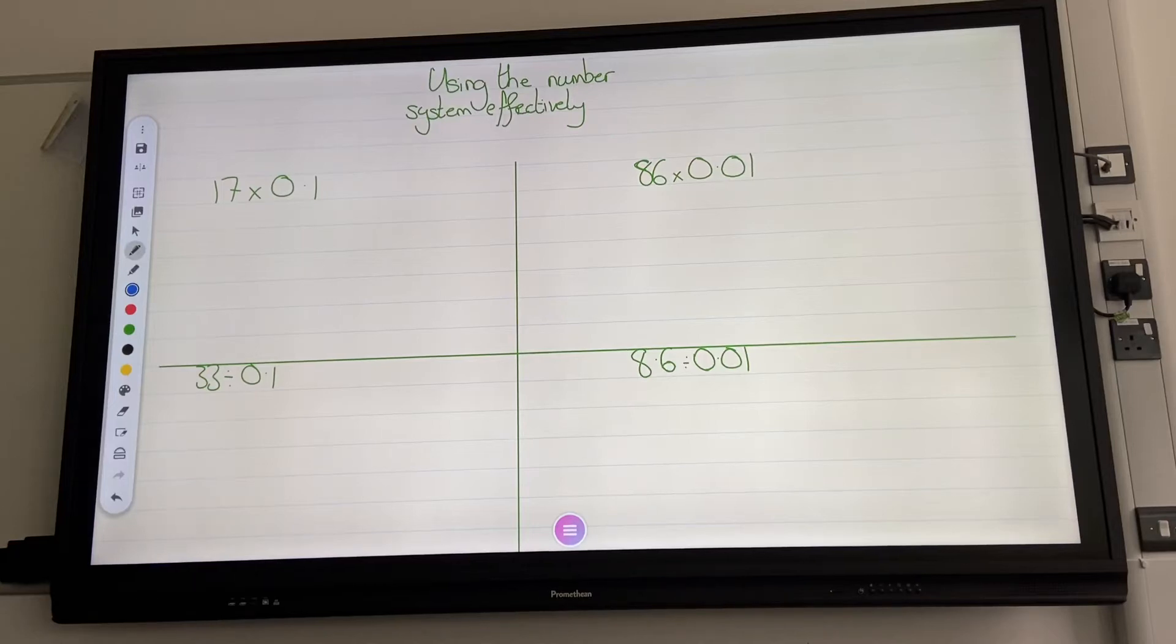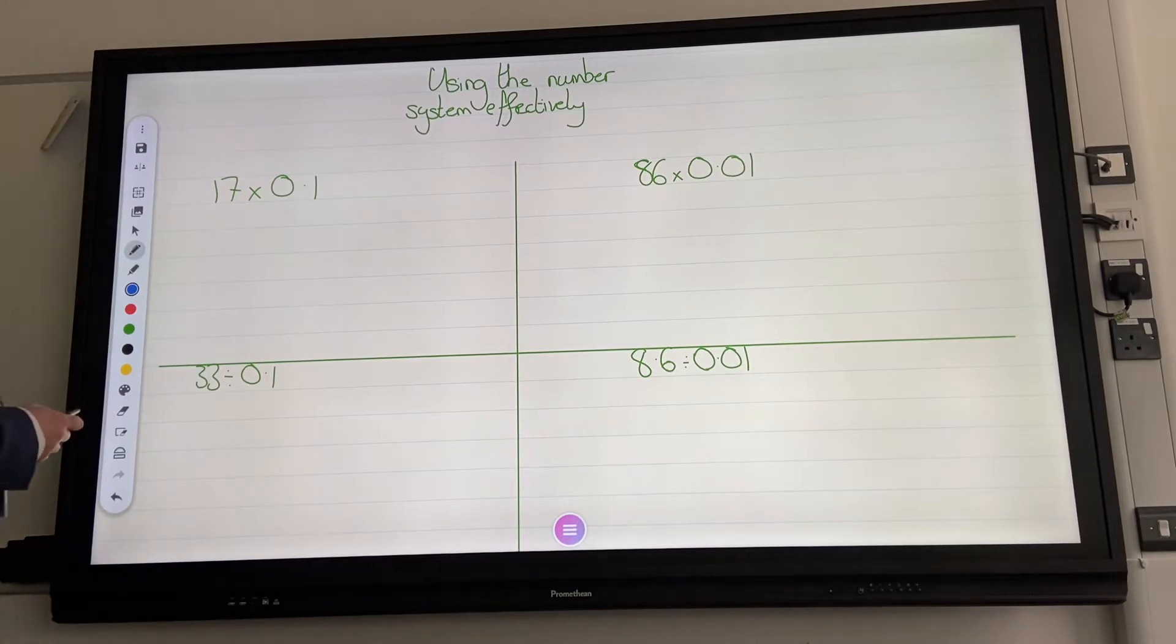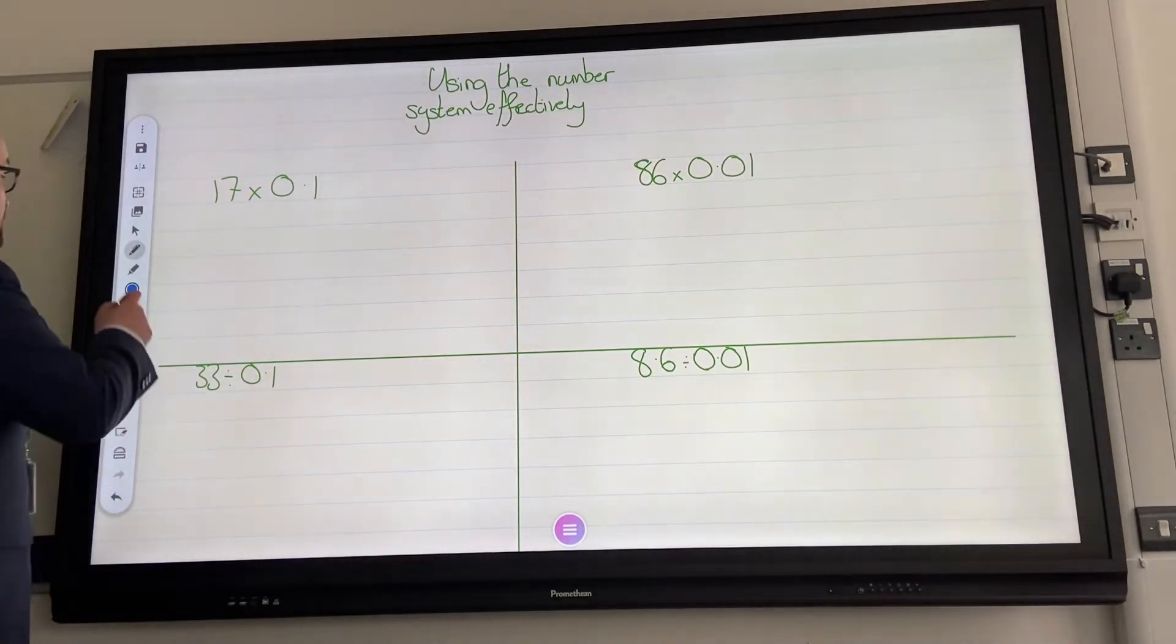Okay, welcome back. We're looking at using the number system effectively, and all that really means is, for this topic, we're going to be looking at multiplying and dividing by 0.1 and 0.01. Four questions, I'm going to go through the methods, you're going to then apply it to a worksheet. So, first one,